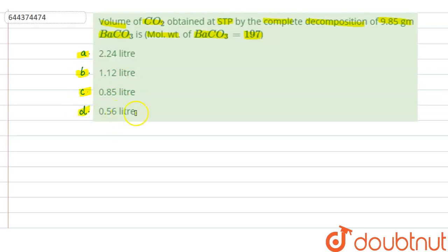In this question we have to find out the volume of CO2 which will be obtained at STP by the complete decomposition of 9.85 gram barium carbonate. So let us see what happens when barium carbonate decomposes.